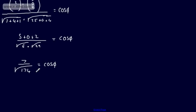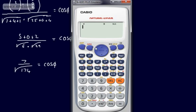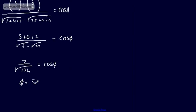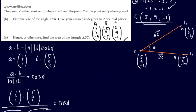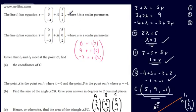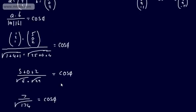Taking the inverse cosine: θ = cos⁻¹(7 / √174). Make sure your calculator is in degrees. This gives 57.949..., so to two decimal places, θ = 57.95°. This is the angle between the two direction vectors, which equals angle ACB.